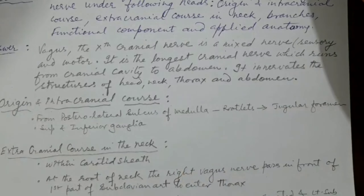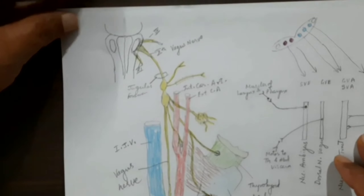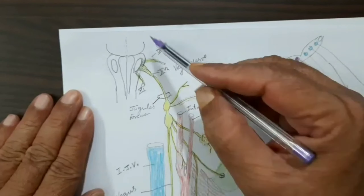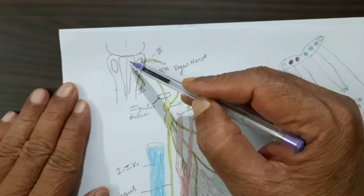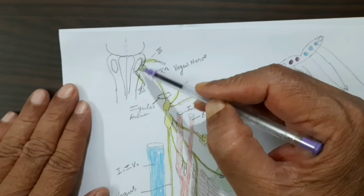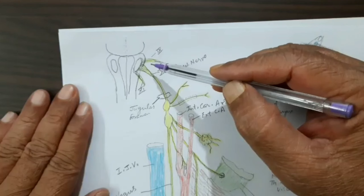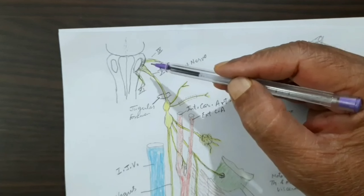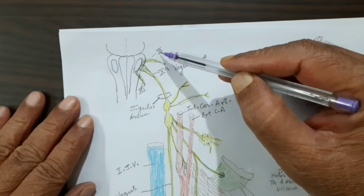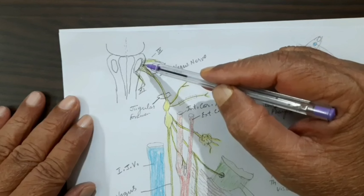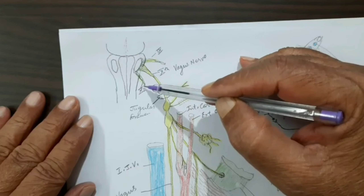Now the origin and its intracranial course. The origin of this nerve is from the posterolateral sulcus. I have drawn the brain stem — the lower part — showing the medulla, pyramids, and the olive. Just lateral to the olive is the posterolateral sulcus. From this posterolateral sulcus of the medulla, three cranial nerves take origin. Yesterday we saw that the topmost nerve taking origin from this sulcus is the ninth — the glossopharyngeal nerve — and after that it is the tenth, or the vagus nerve.